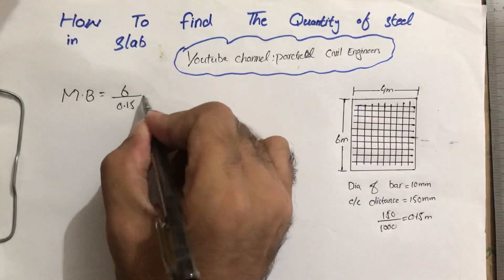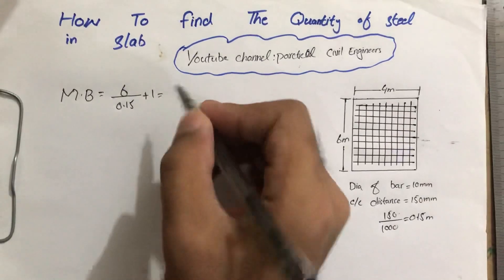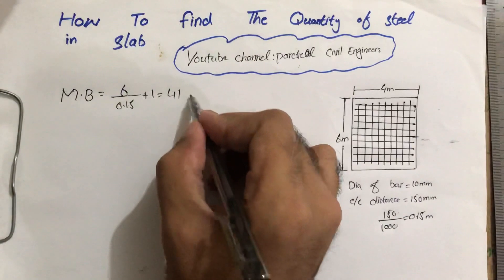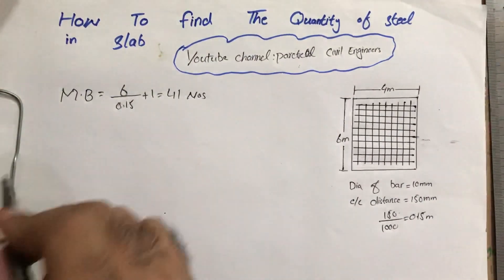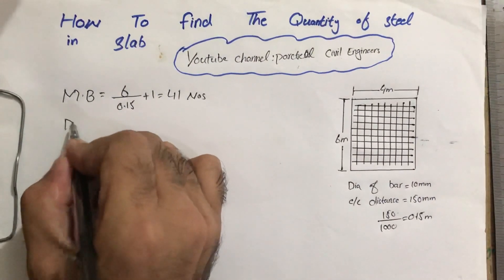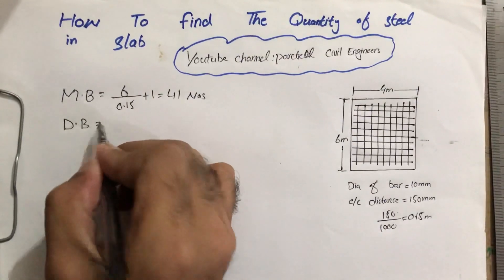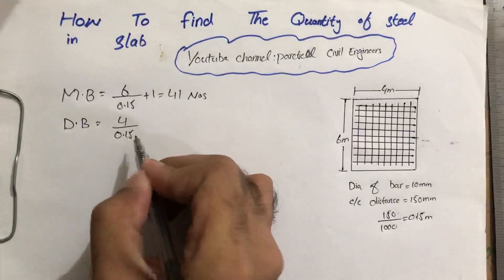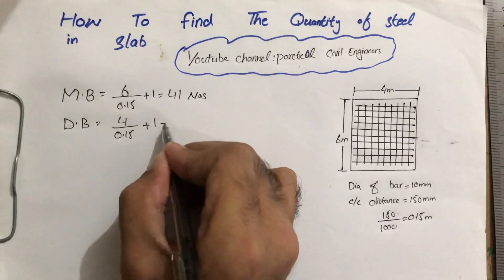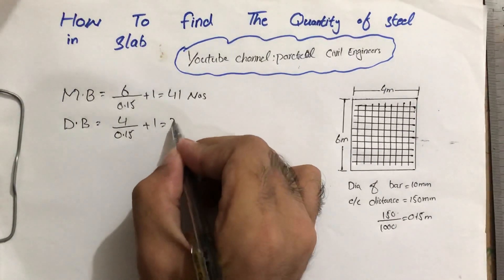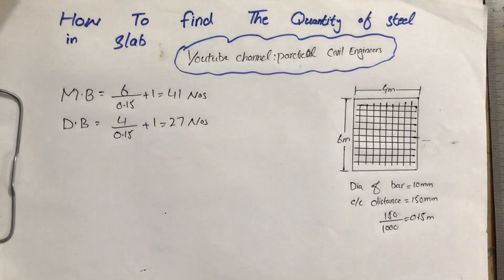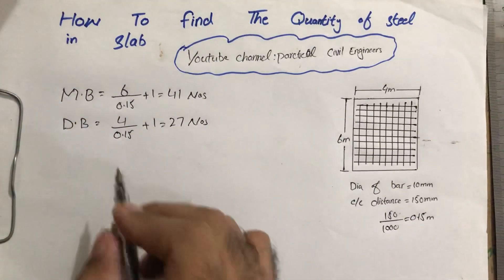Same as for distribution bars: 4 meters divided by center to center which is 0.15, plus 1. When we calculate it, it's 27 numbers. So when we find the length of a bar...